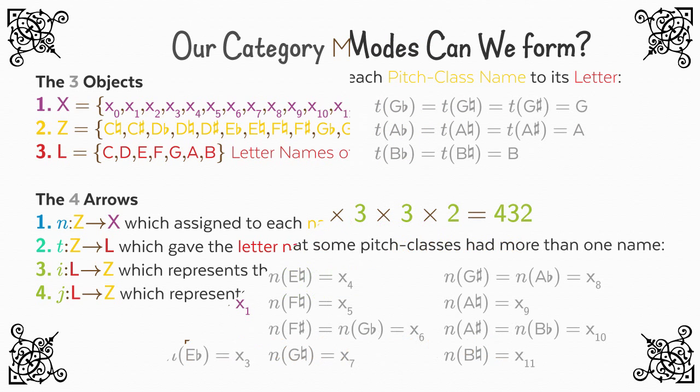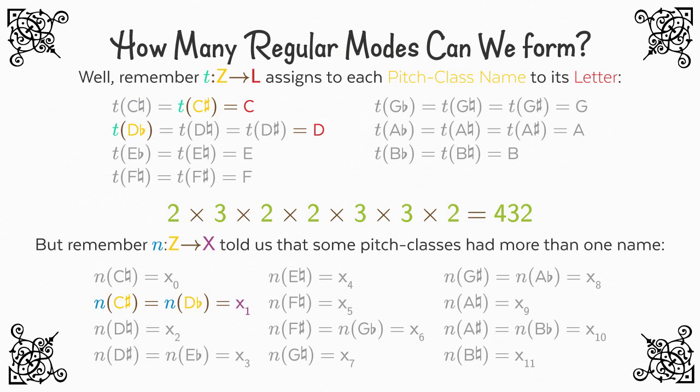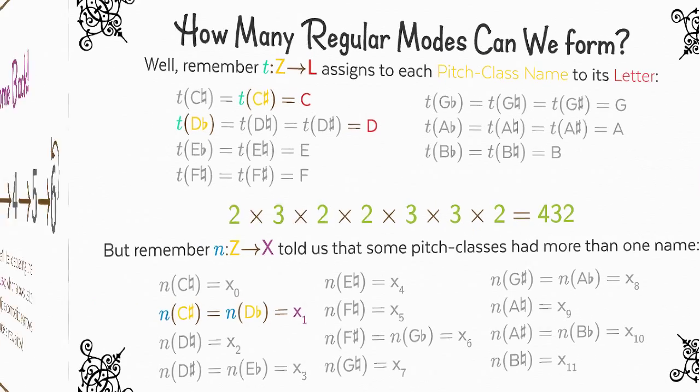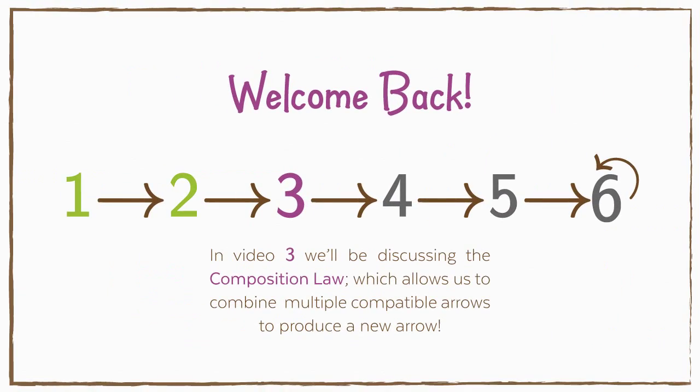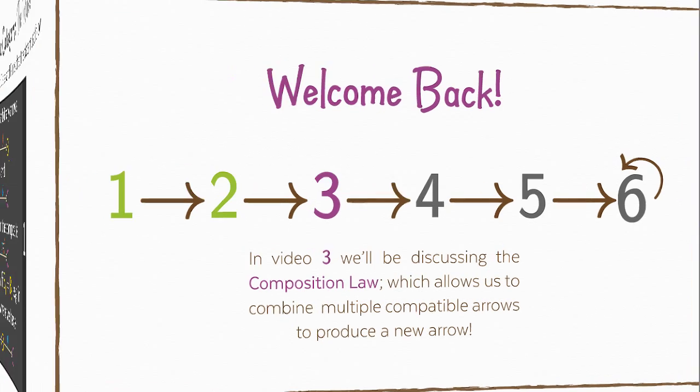At the end of the last video, we asked: how could we form more regular modes? We realized this was not as simple as just choosing a particular C, D, etc., because we could choose two different pitch class names with different letter names that mapped to the same pitch class. We realized we needed to combine the information in more than one map. Thankfully, composition — the combination of maps — is an axiom of the theory, and this is what we'll discuss today.